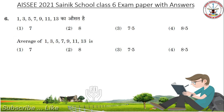Average of 3, 5, 7, 9, 11, 13. Find the average of these numbers. Answer is 7.